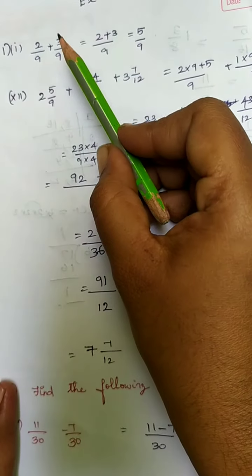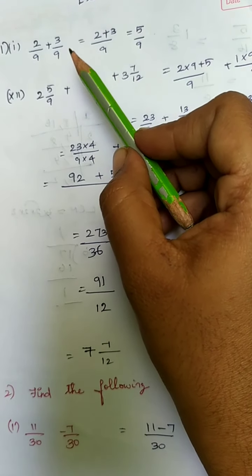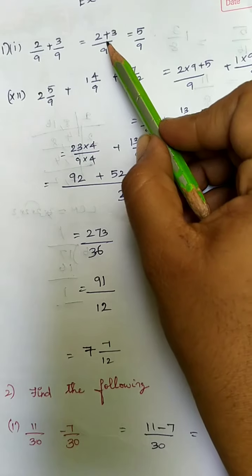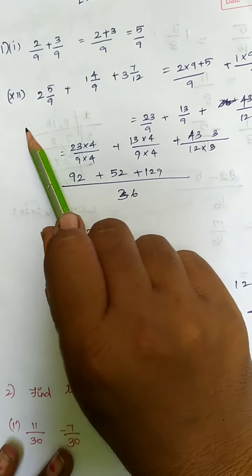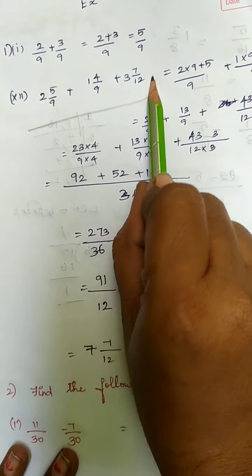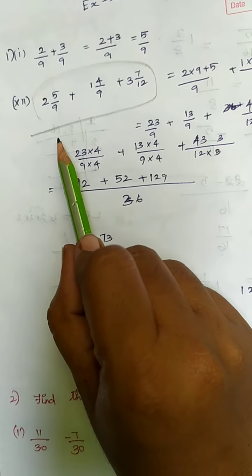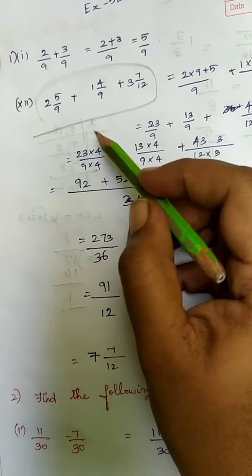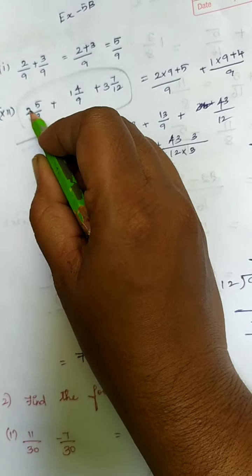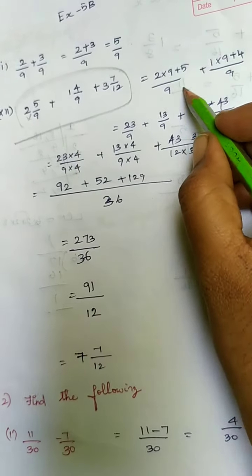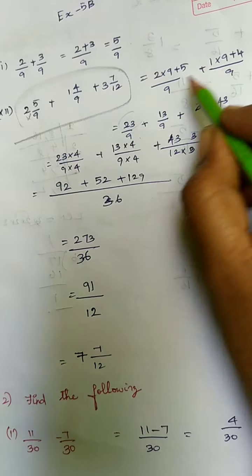Your first problem: 2 by 9 plus 3 by 9. You have the same denominator so you can directly add the numerators: 2 plus 3 is 5 by 9. The next problem has a mixed fraction, so convert it to an improper fraction: 9 twos are 18, plus 5 is 23 by 9. Again, 1 into 9 is 9, plus 4 is 13 by 9. And 3 into 12 is 36, plus 7 is 43 by 12.